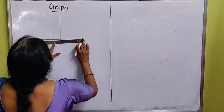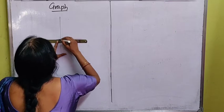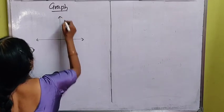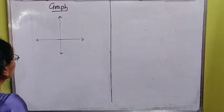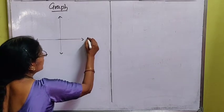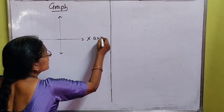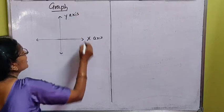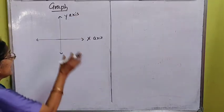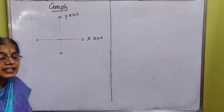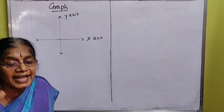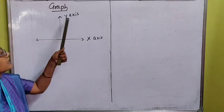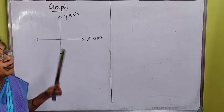Let us take two straight lines that are perpendicular and intersecting each other. The horizontal straight line we always call the x-axis, and the vertical straight line we call the y-axis. With the help of x-axis and y-axis, you represent the linear equation — that is called a graph.